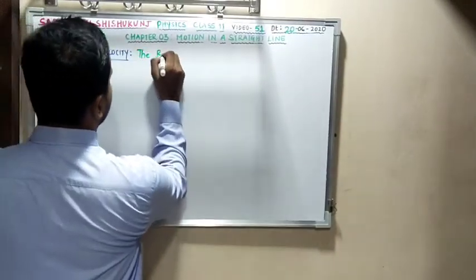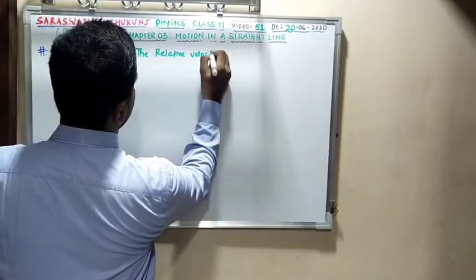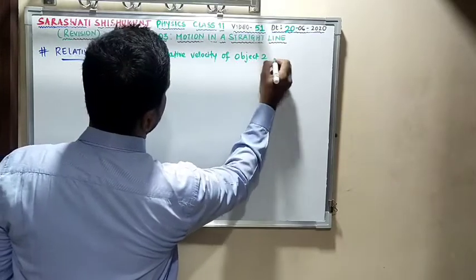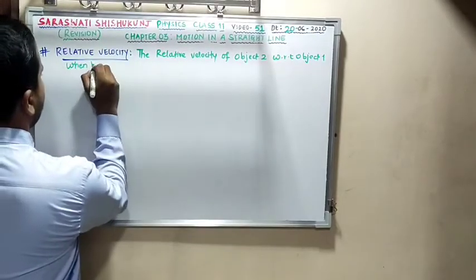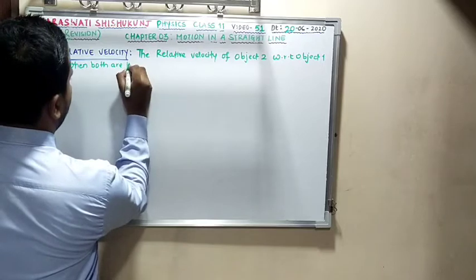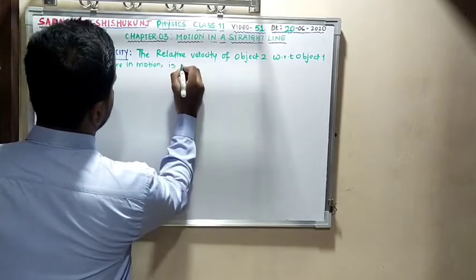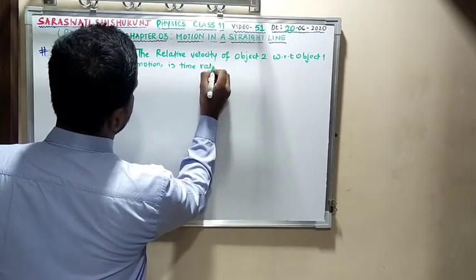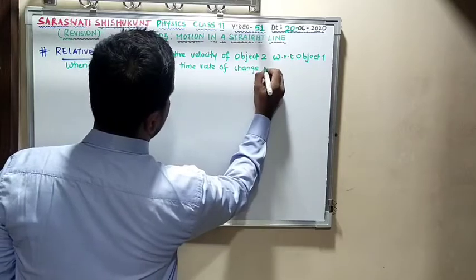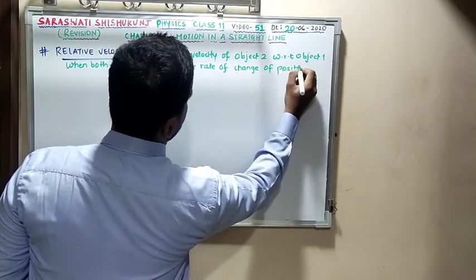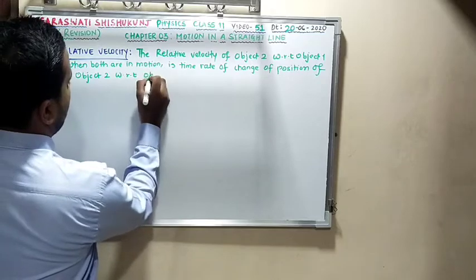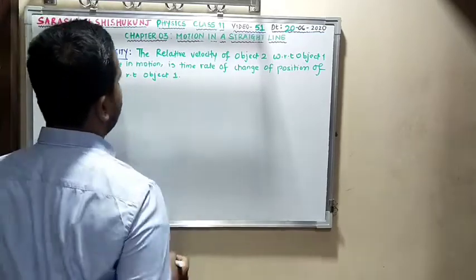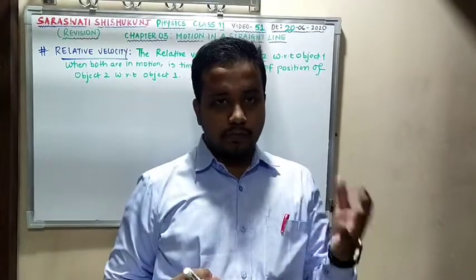Let me write the definition for relative velocity. The relative velocity of object 2 with respect to object 1, when both are in motion, is the time rate of change of position of object 2 with respect to object 1.